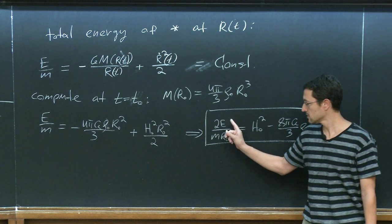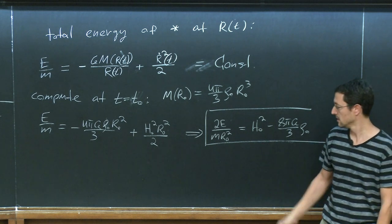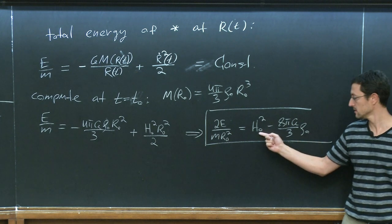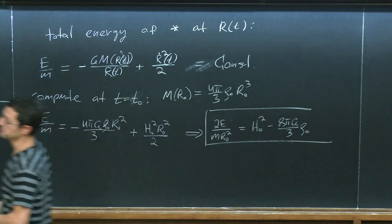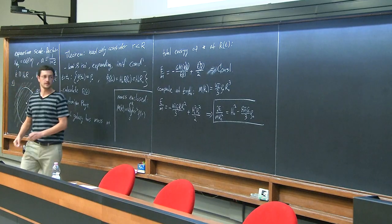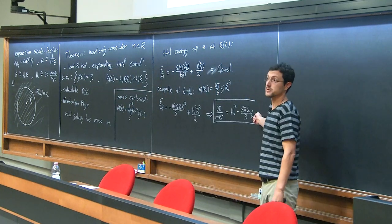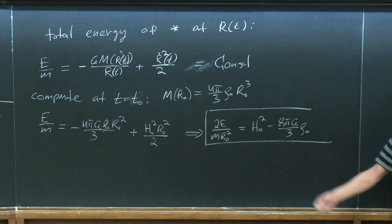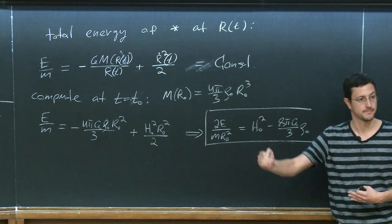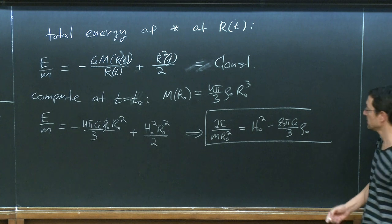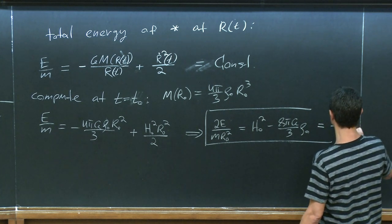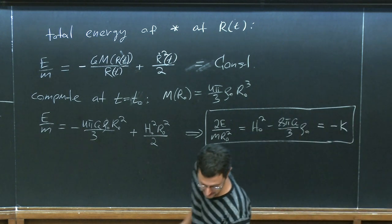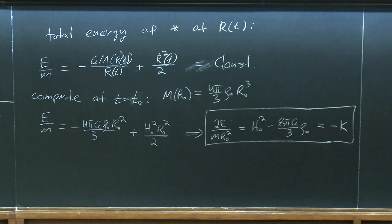Even though the energy per unit mass depends on my initial shell location, the energy over R-naught squared is proportional to my uniform initial conditions. This number H-naught and this density rho-naught were the same inside my initial shell — it's a homogeneous constant. It's a constant because it's given by the initial conditions, and it's homogeneous by initial conditions too. I give it a very telling name: I call this constant −k. It's the common terminology for this constant.